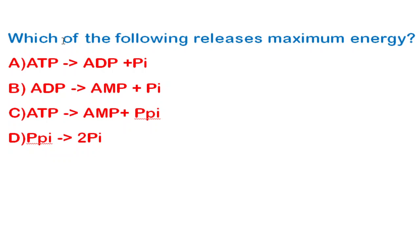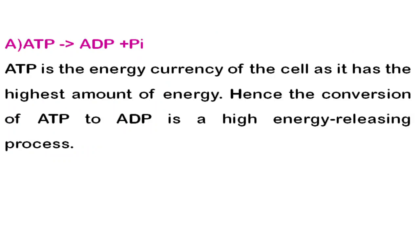The first question is: which of the following releases maximum energy? The correct answer is option A — when ATP gets converted into ADP, it releases a high amount of energy. We all know ATP is the energy currency of the cell and is the highest energy-containing molecule.